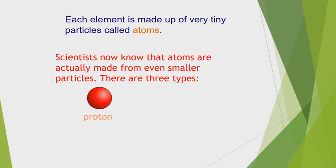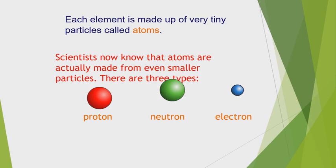Each element is made up of very tiny particles called atoms. Scientists now know that atoms are made from smaller subatomic particles. There are three types: protons, which are positively charged; neutrons, which have no charge; and electrons, which are negatively charged.